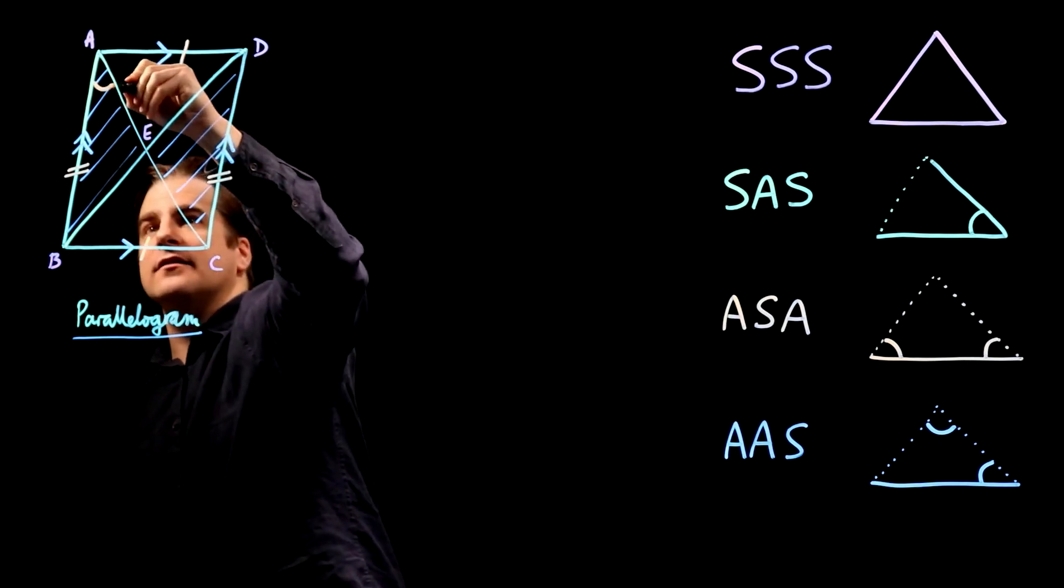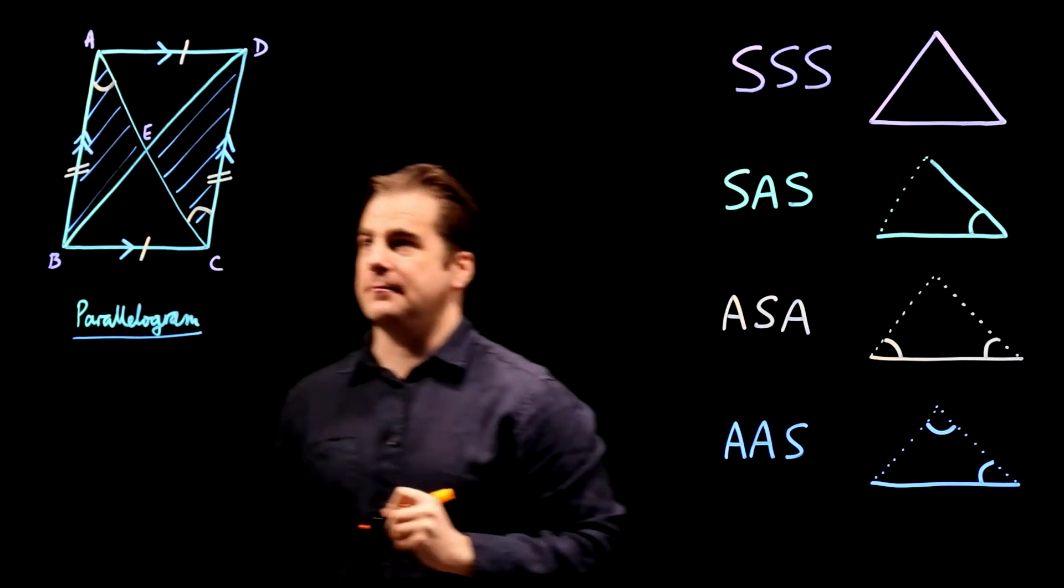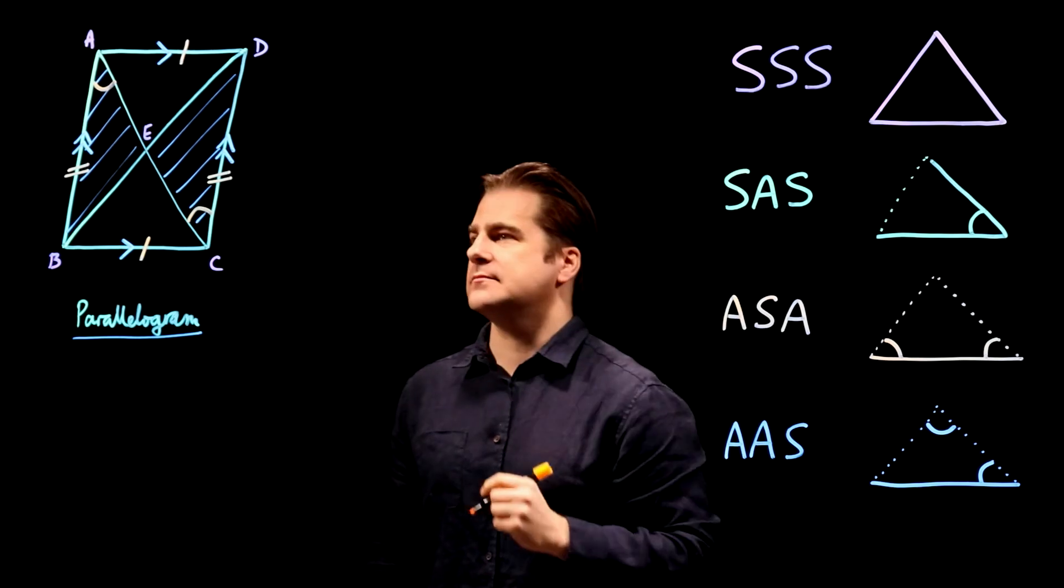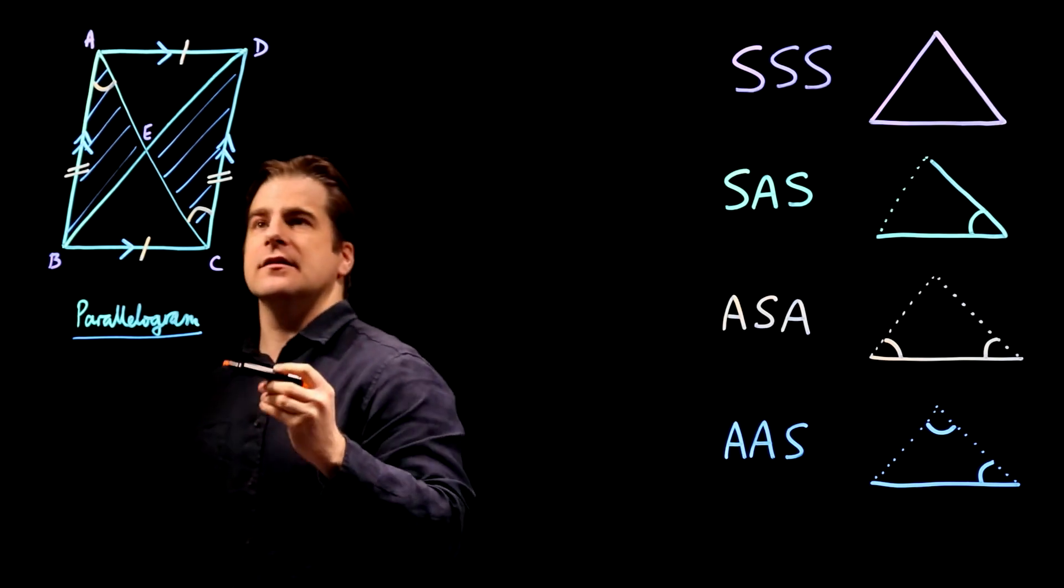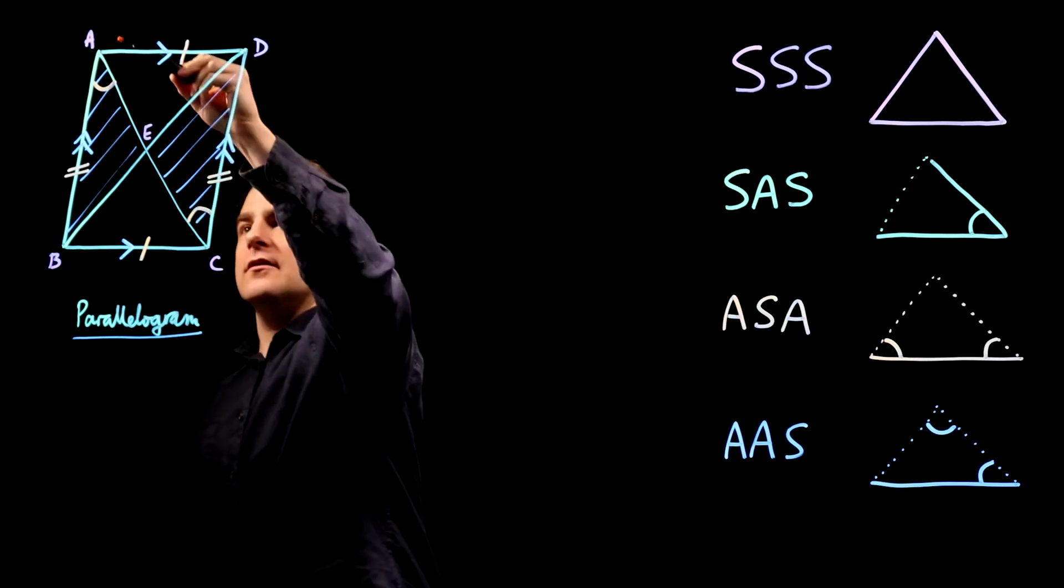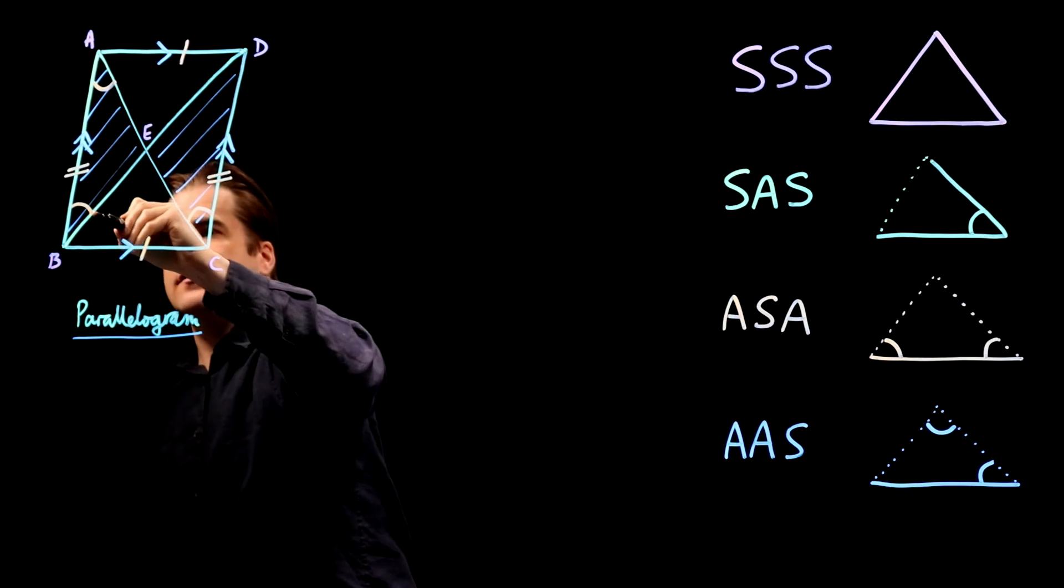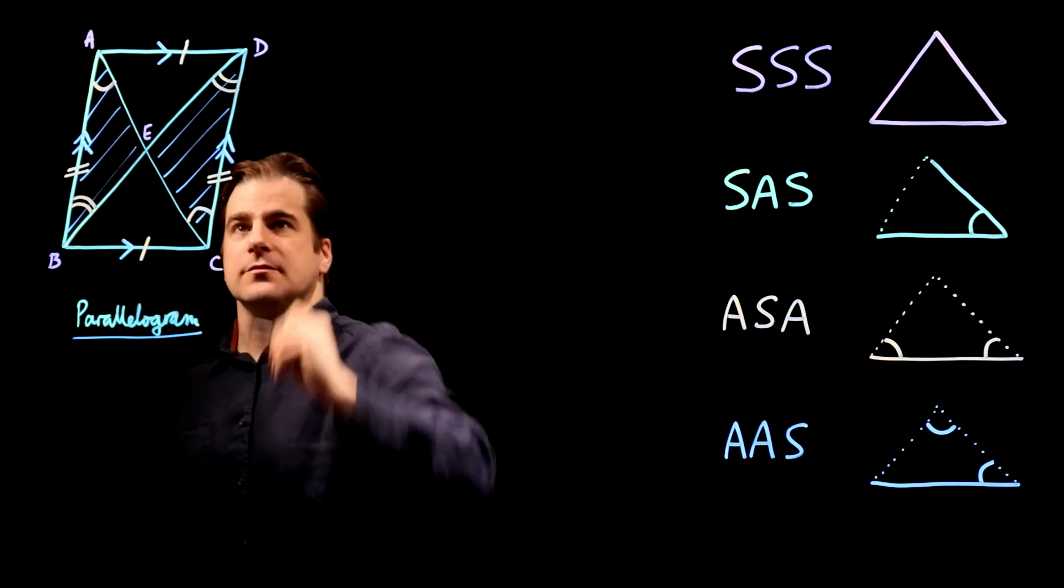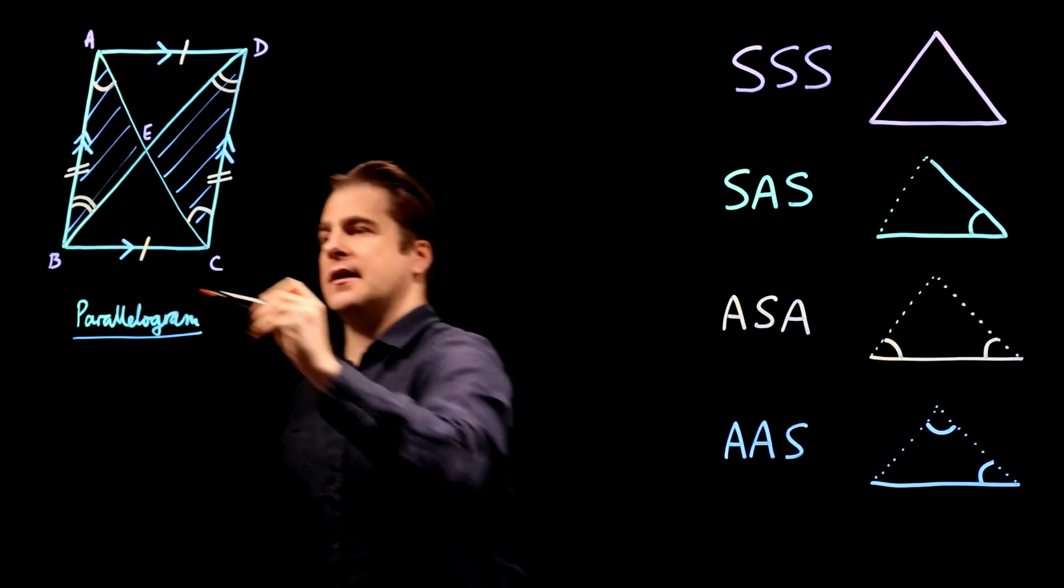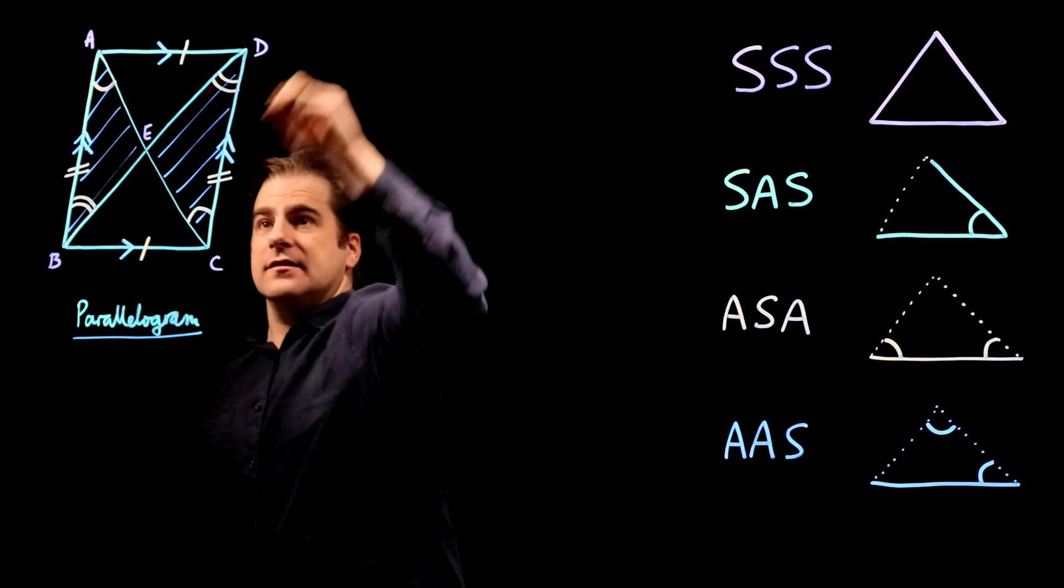We can say that that angle there is the same as that angle there. Same argument, Z angles. There, there, there. We can say that that angle is the same as that angle. Again, BD, straight line, intersecting two parallel lines, Z angles.